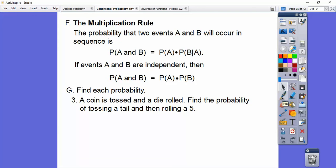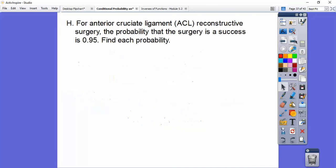A coin is tossed and the die is rolled. Find the probability of tossing a tail and then rolling a five. Well, the probability of tossing a tail is one-half. The probability of rolling a five is one-sixth. When you multiply those, you get one-twelfth, or .083. Easy enough.